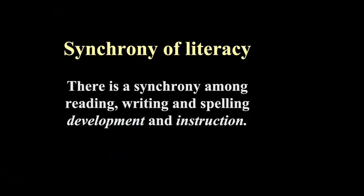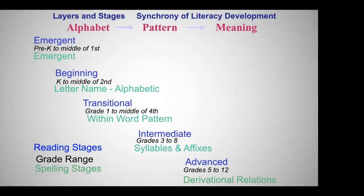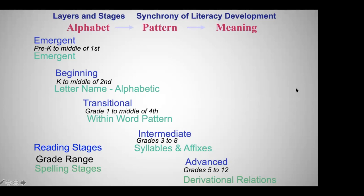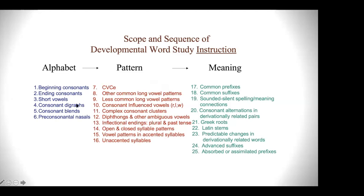Here's the developmental model again: emergent reading and spelling at the top, and the five stages of reading and spelling, with rough grade ranges. A transitional reader falls between first and fourth grade — that's quite a range. I've been in sixth-grade classrooms throughout the country where a third of the students are still transitional readers, still looking at long vowels. You have to take people where they're at developmentally.